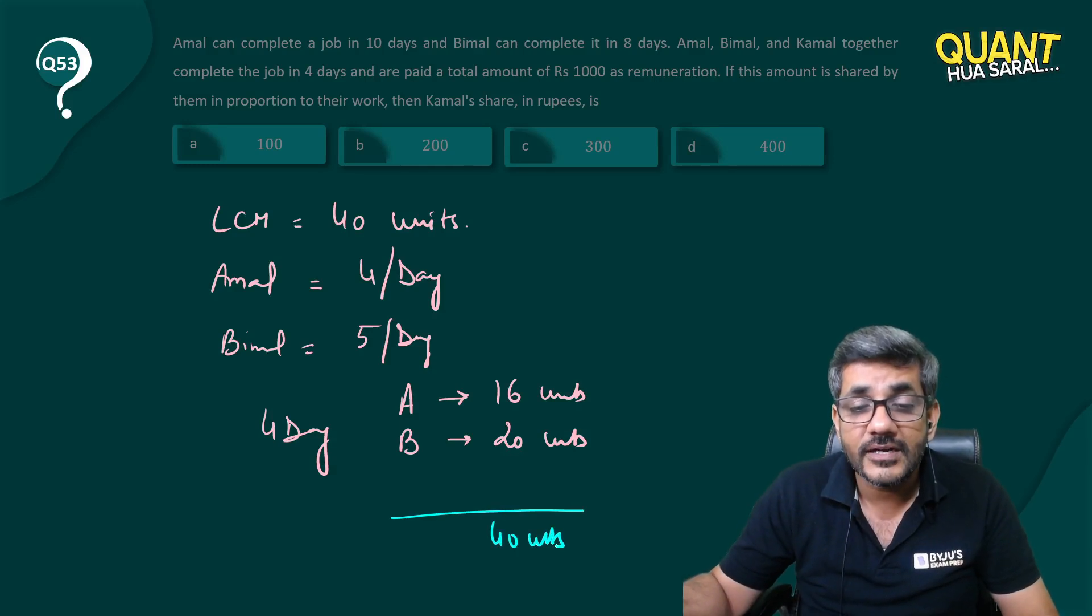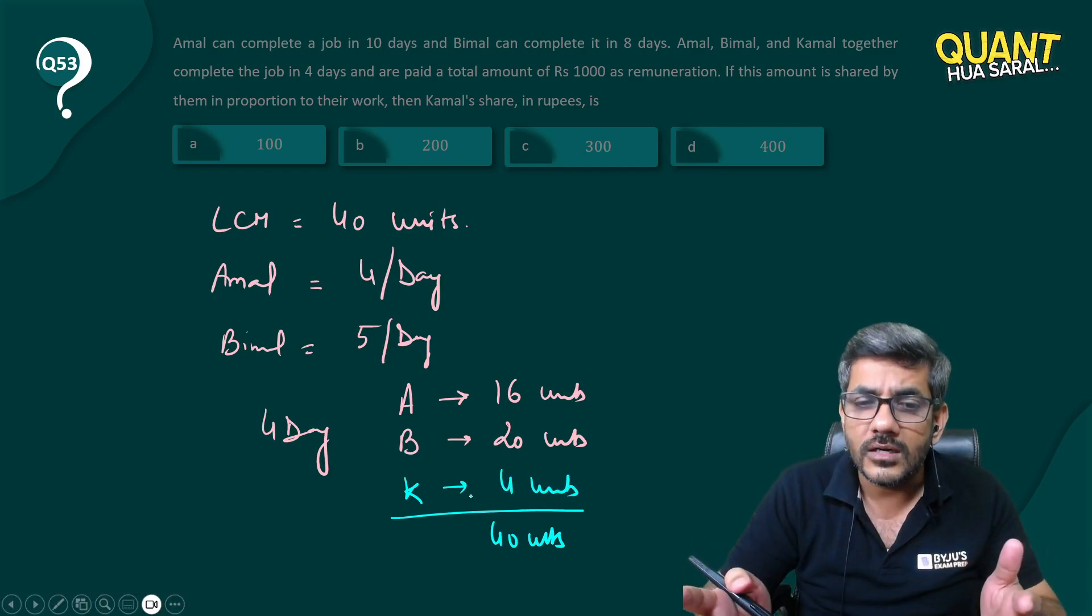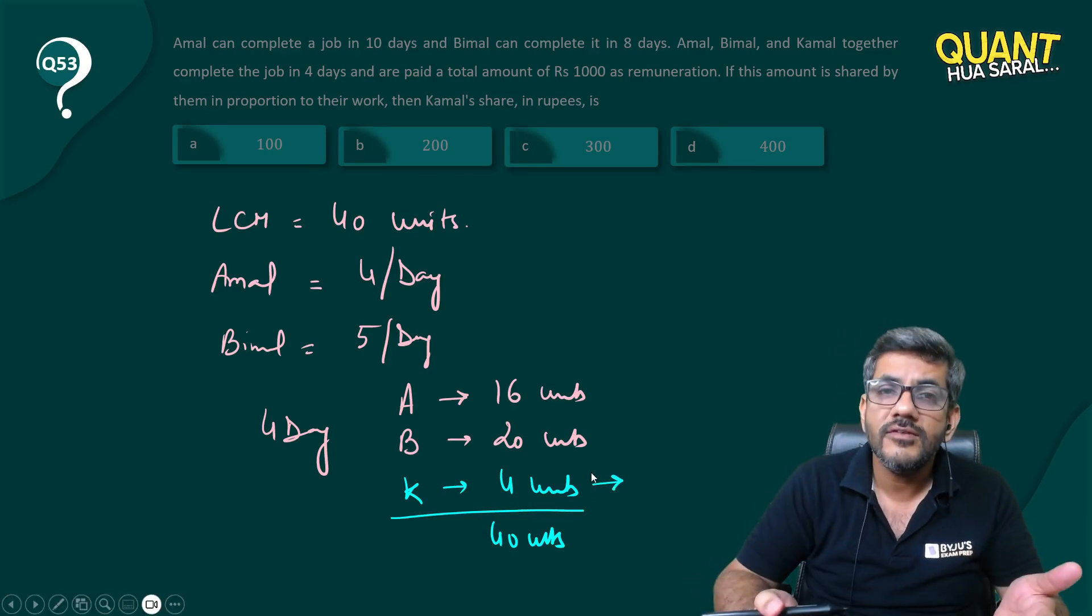And total they have to make 40 units, so Kamal must have made 4 units only. Out of the total work, the work done by Kamal is 1/10, so the money given to him would also be 1/10.